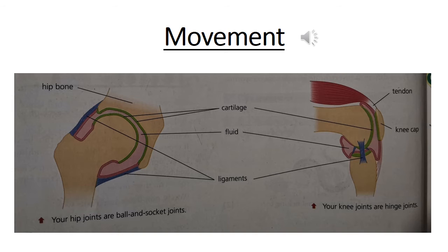For example, the shoulder allows for backward, forward, sideways and rotating movements. Ball and socket joints: the ball and socket joints in your hips let your legs move in every direction. Hinge joints allow movement in one direction, as seen in the knees and elbows.